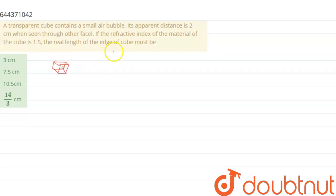Its apparent distance is 2 cm. So, let us say that the real distance will be this. Then, the apparent distance will be this side, right?